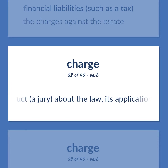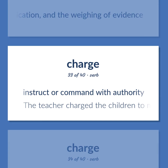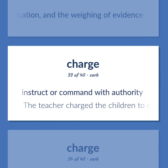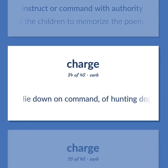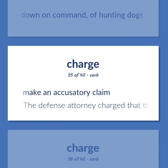Charge: To instruct a jury about the law, its application, and the weighing of evidence. To instruct or command with authority. Example: The teacher charged the children to memorize the poem. To lie down on command — of hunting dogs. To make an accusatory claim. Example: The defense attorney charged that the jurors were biased.